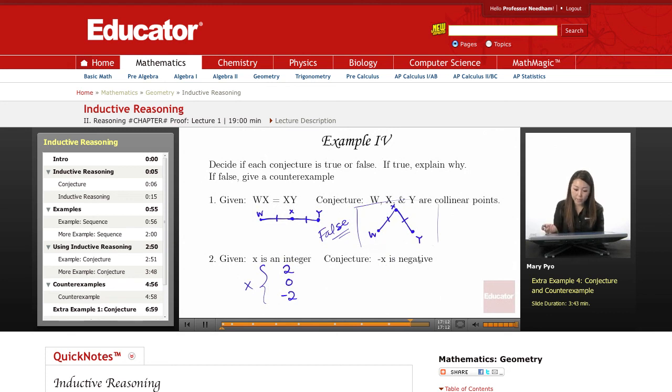Conjecture is that negative X is negative. So if I make this negative, negative 2 is negative X, right? So this is true. This is an example of the conjecture.